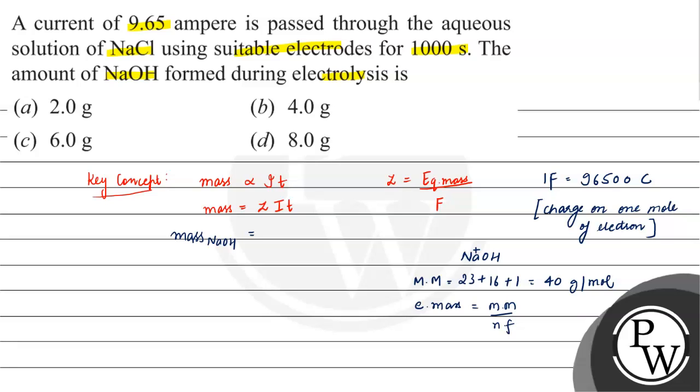To find out equivalent mass, we use molecular mass upon N factor. It exists as Na positive 1 and OH negative 1. So N factor is the charge on the ion, which is 1 here. That means molar mass and equivalent mass are equal, that is 40. So Z is 40 upon 96500.